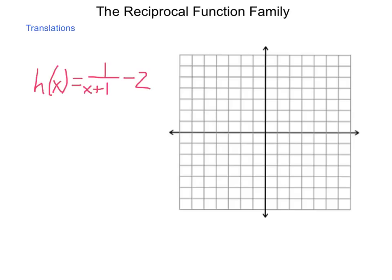Let's look at graphing one that has multiple changes happening. When you have a function that involves more than just a over x, the first thing you need to do is establish your new center of the graph by finding your vertical and horizontal asymptotes. The vertical asymptote occurs when our denominator, x plus 1, equals 0. Solving for x, we get x equals negative 1, so at negative 1 we have a vertical asymptote.